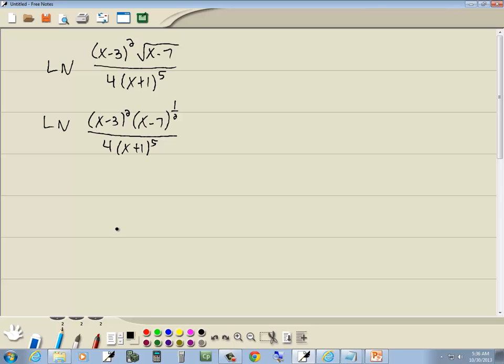Okay, now we've got a lot of different things going on here. We've got 2nd power, 1 half power, 5th power, we've got multiplication, we've got division. But the main thing happening is division. We've got something up on top divided by something on the bottom. Now division becomes subtraction, so we're going to have ln of x minus 3 squared, x minus 7 to the 1 half, minus ln 4 times x plus 1 to the fifth.